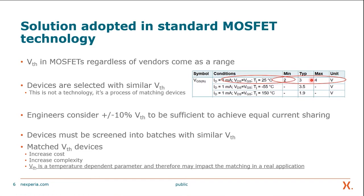The solution adopted for regular MOSFET technology is to essentially screen devices into batches. Threshold voltage in MOSFETs, regardless of vendor, always comes in a range — here's a snippet from a datasheet where we see the range between 2 and 4 volts. So we select MOSFETs with similar threshold voltages, getting them into a tighter range. This is not a technology — it's a process of matching devices, where after the devices have been made you sort them based on threshold voltage. Engineers consider plus or minus 10 percent threshold voltage to be sufficient to achieve equal current sharing, but this means devices must be screened into batches, which increases cost and complexity. Furthermore, threshold voltage is still a temperature-dependent parameter, so the impact can still be seen on current sharing in a real application.